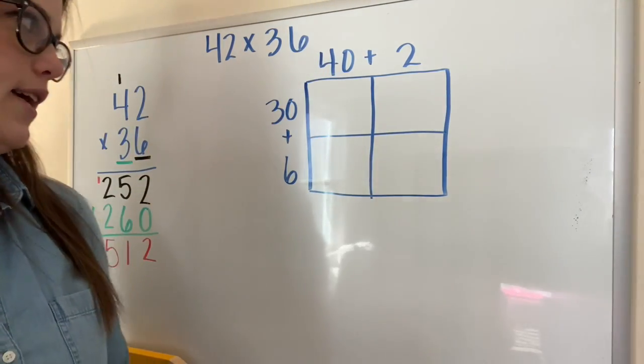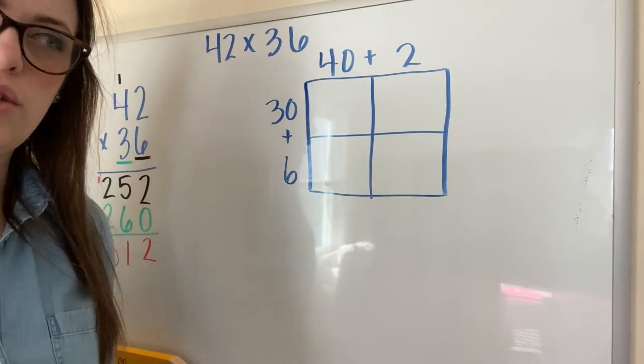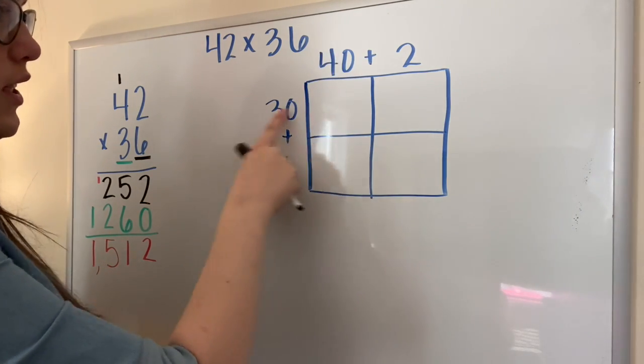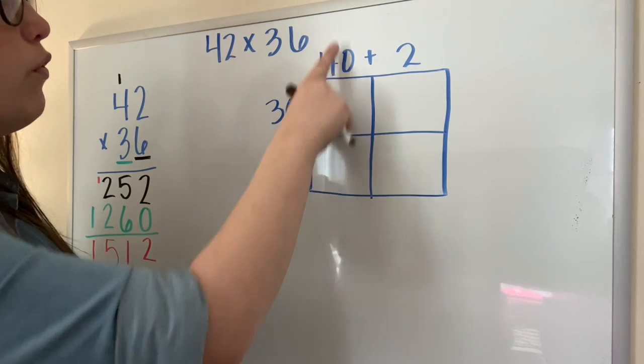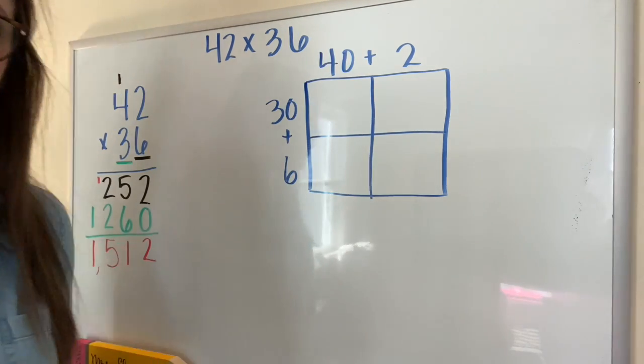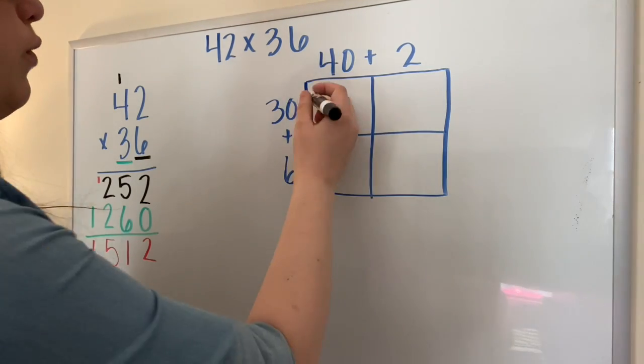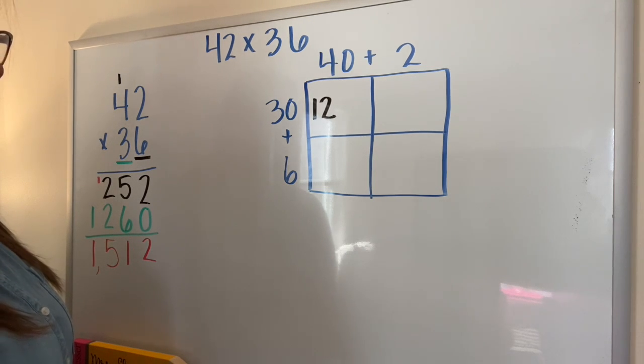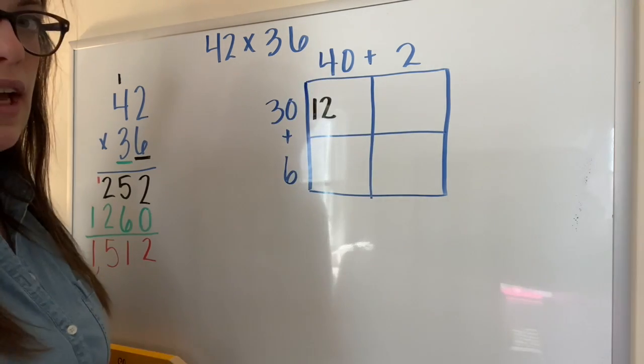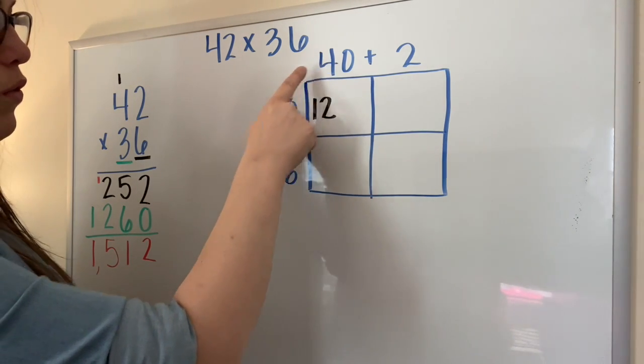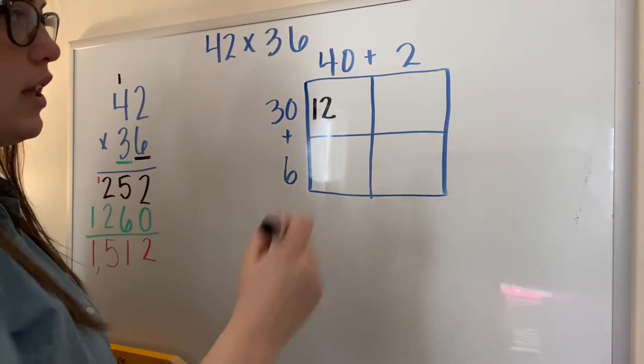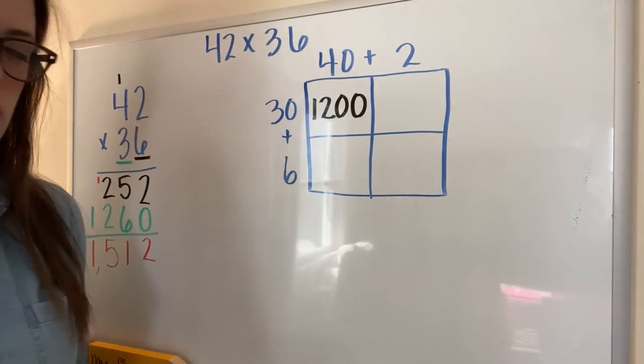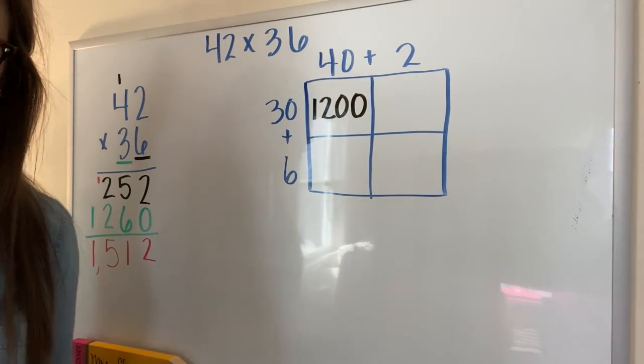Now I'm going to start multiplying. Remember, just like we did with one digit by two digit multiplication, in a box, you're going to multiply the number on top by the number on the side. First, I have to multiply 40 times 30. Well, I know what four times three is, four times three is 12. But I also have to multiply that again by 10 and by 10 again, because I wasn't just multiplying four times three, I'm multiplying 40 by 30. So I have to make sure that I'm keeping track of which numbers I'm multiplying.